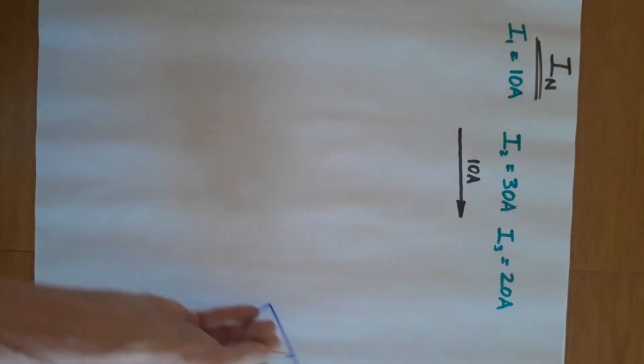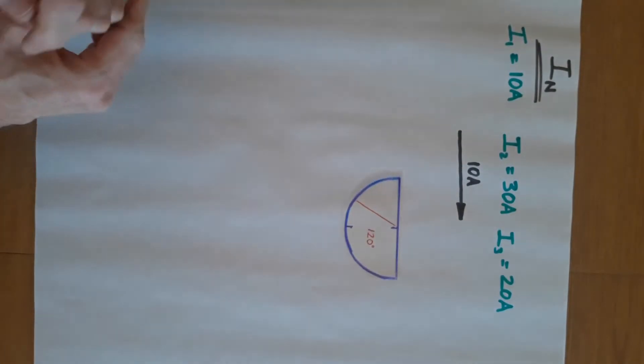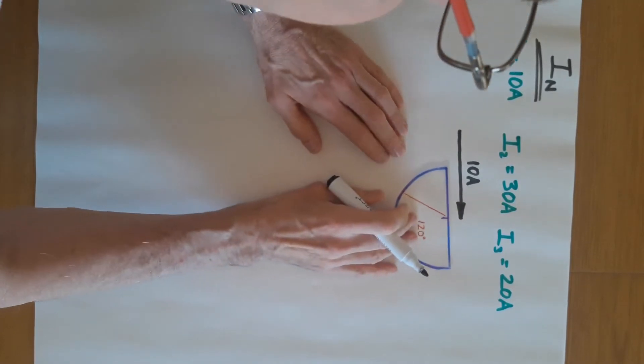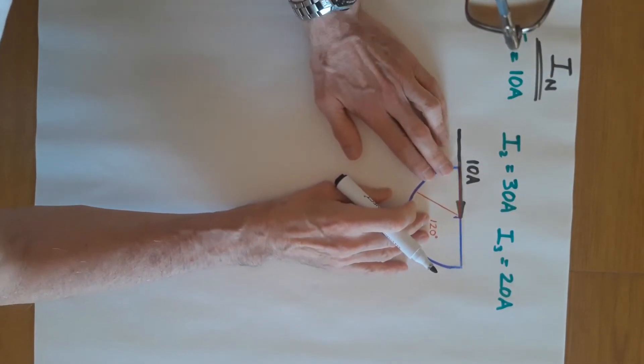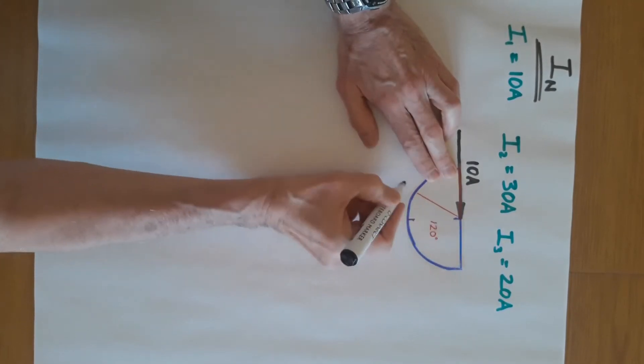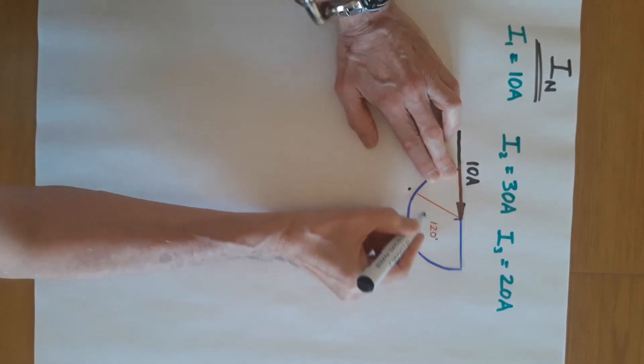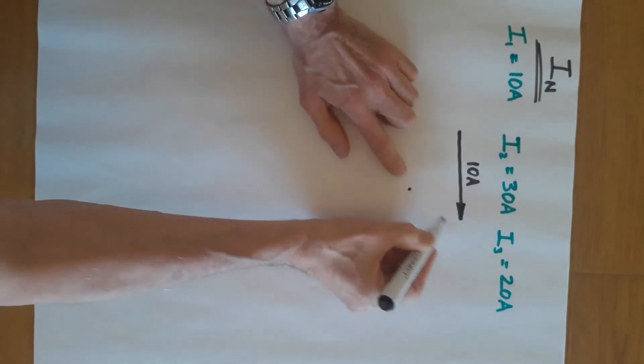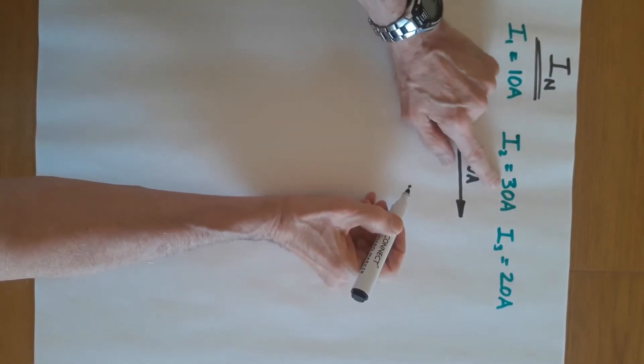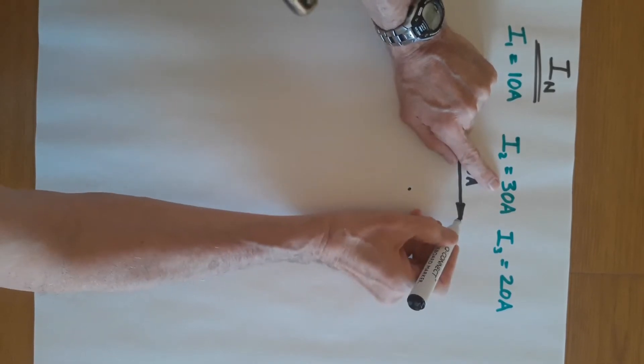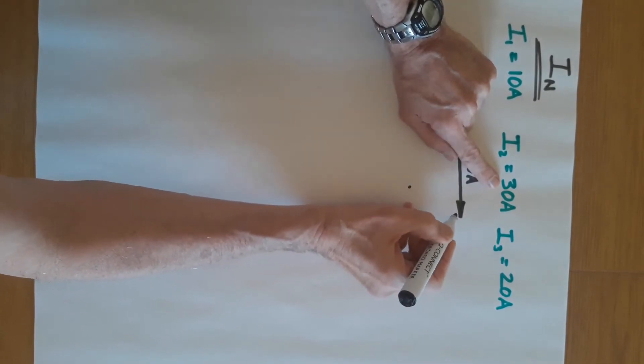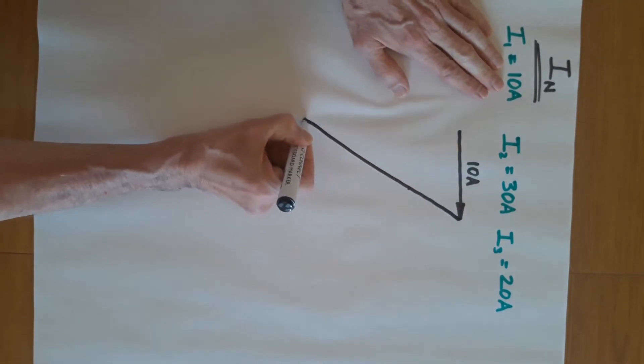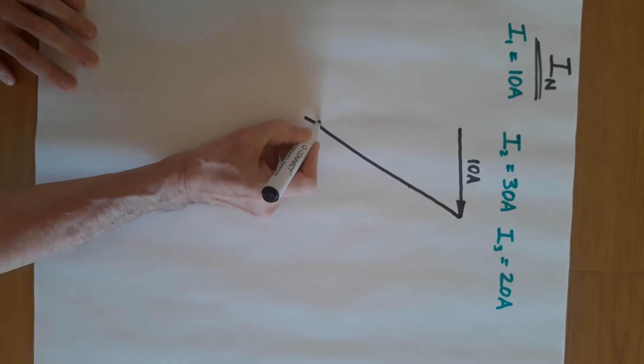So to do the next current, we're going to use exactly the same scale and we're going to use our protractor. Put the protractor on the very end of the line and you're going to measure 120 degrees around, because that's how far apart the phases are. So 120 degrees, and we're going to draw to the same scale a line that is 30 amps.